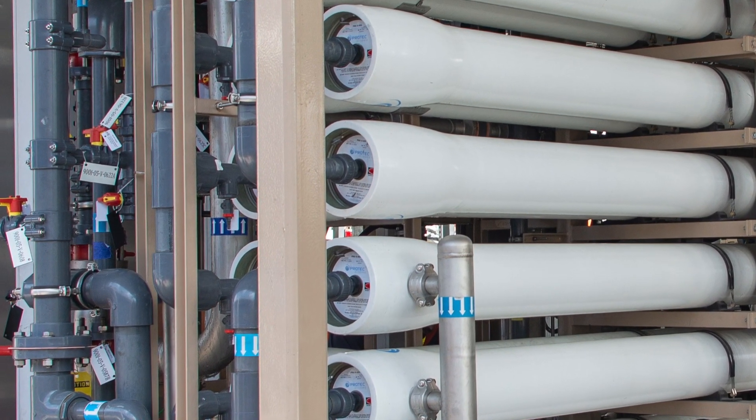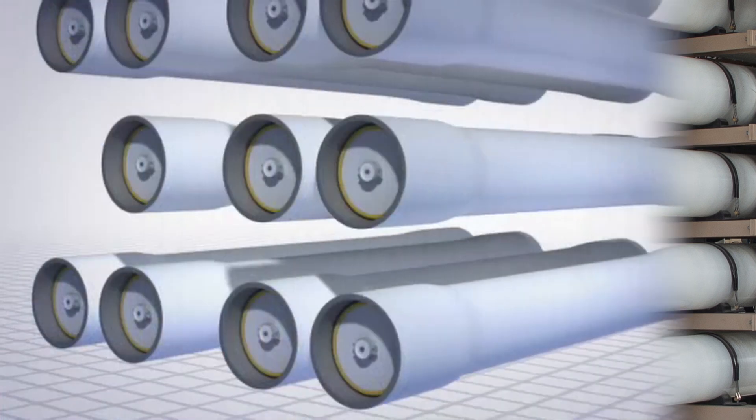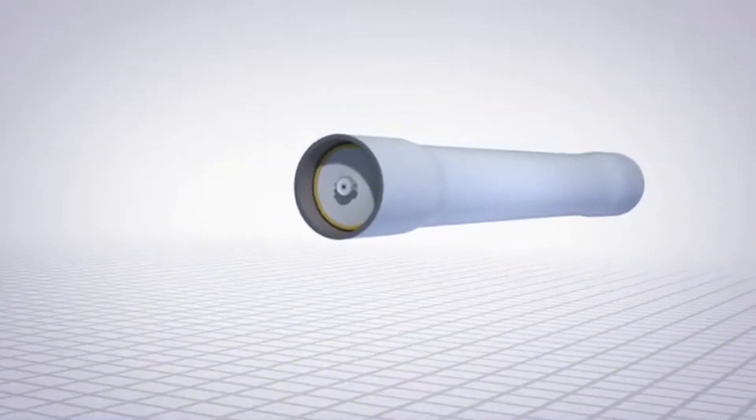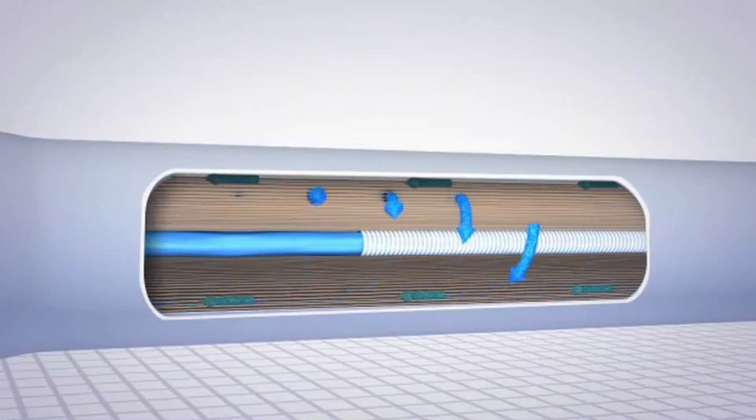Reverse osmosis works by forcing water through a special plastic membrane sheet to remove compounds such as salts, organic compounds, microorganisms, viruses, and pharmaceuticals.